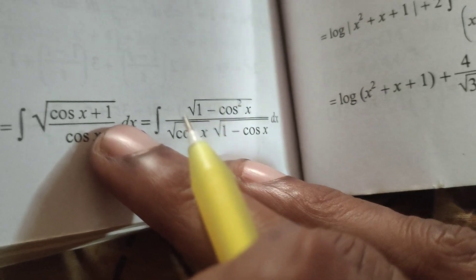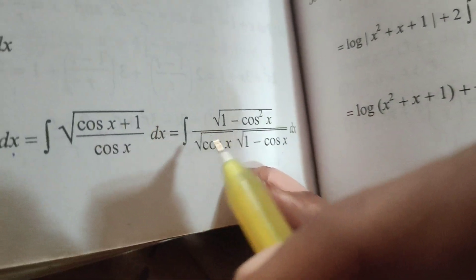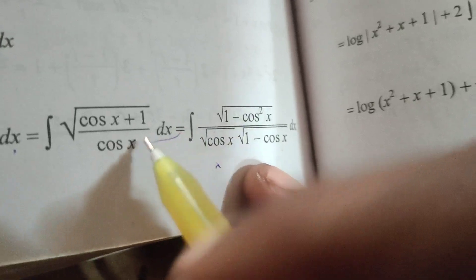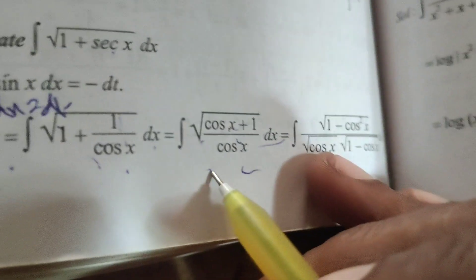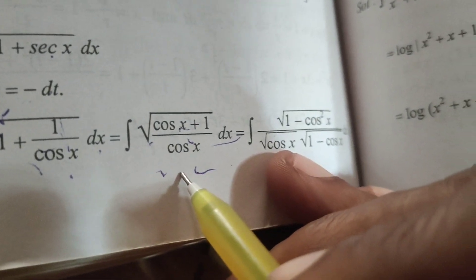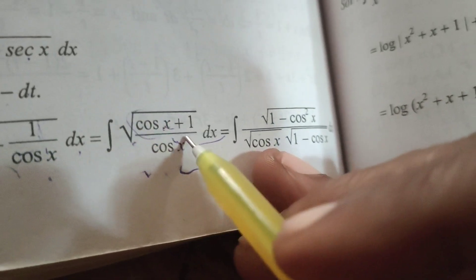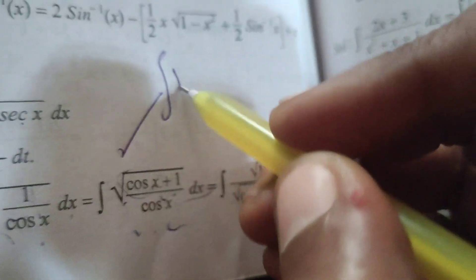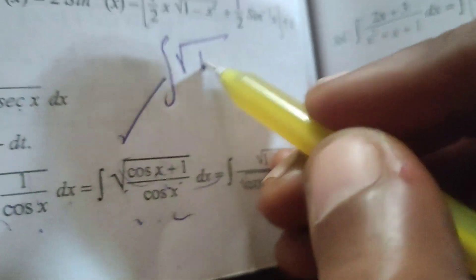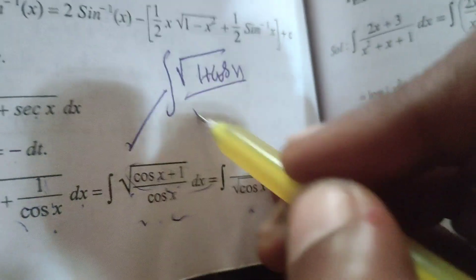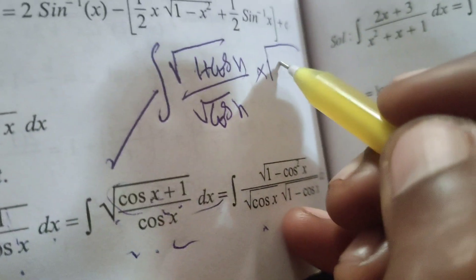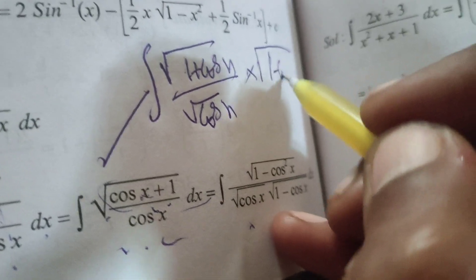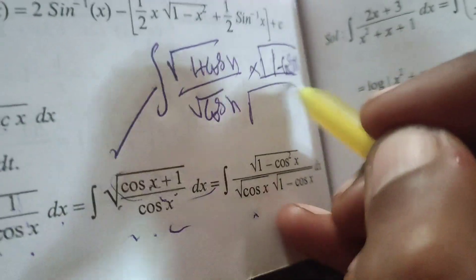Now here we have root of 1 plus cos x over root of cos x. To rationalize, multiply numerator and denominator by root of 1 minus cos x.